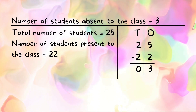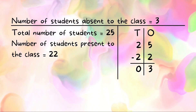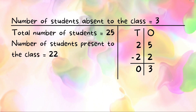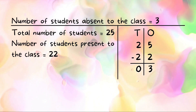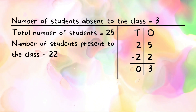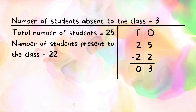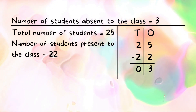Now, working on the right side, we align the numbers according to their place values — ones and tens — which is very important while adding and subtracting numbers. So 25 minus 22 gives us 3. Therefore, the number of students absent from the class equals 3.